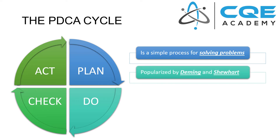The plan-do-check-act cycle, or PDCA, was popularized by a guy named W. Edwards Deming, who gave credit to another guy named Walter Shewhart. So you sometimes hear this called the Deming cycle or the Shewhart cycle. Shewhart wanted to really emphasize the idea of studying your results, so sometimes he called it the plan-do-study-act cycle. You'll hear it called by different names.